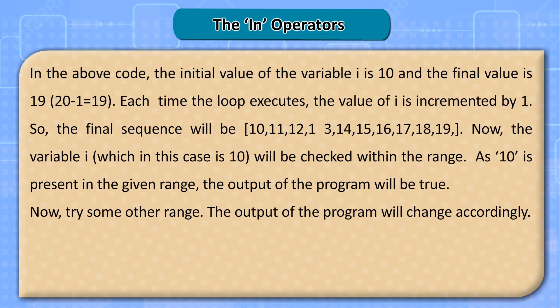Program 4: in the above code, the initial value of variable i is 10 and the final value is 19 (20 minus 1 equals 19). Each time the loop executes, the value of i is incremented by 1. So the final sequence will be 10, 11, 12, 13, 14, 15, 16, 17, 18, 19. The variable i, which in this case starts at 10, will be checked within the range. As 10 is present in the given range, the output of the program will be true. Try some other range and the output will change accordingly.